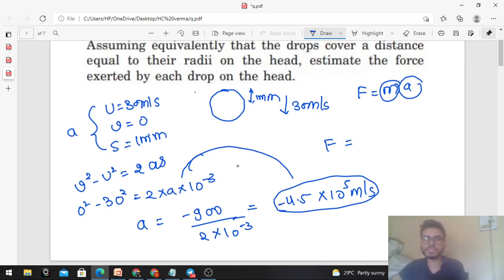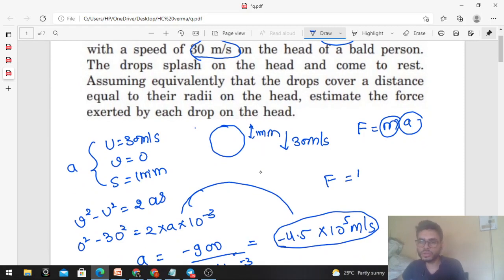If I talk about force, force will be mass into acceleration. Mass is 4 mg, which is 4 × 10⁻⁶ kg when converted. From mg to kilogram, you multiply by 10⁻³ for gram and then by 10⁻³ again, so it becomes 10⁻⁶ kilogram. So 4 × 10⁻⁶ multiplied by the acceleration. Here you can take the magnitude or modulus of the acceleration because we want to find the force.